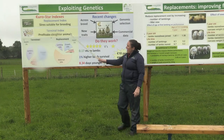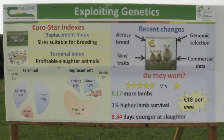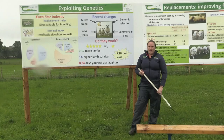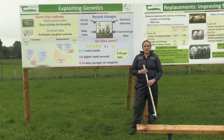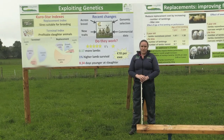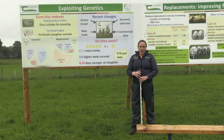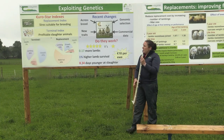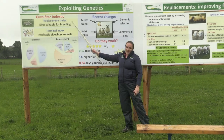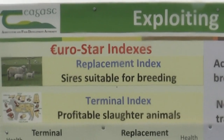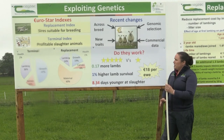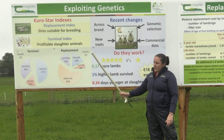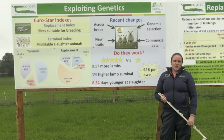Our starting point are the Eurostar indexes — the Sheep Ireland indexes that are available on most rams now sold through Ireland. There are two different indexes. The first question you have to ask yourself when going out to buy a ram is: what do you want that ram to do on your flock? If you're retaining a lot of replacements, pay particular importance to the replacement index. If your ram is mostly for producing lambs for slaughter, you want to focus on the terminal index.